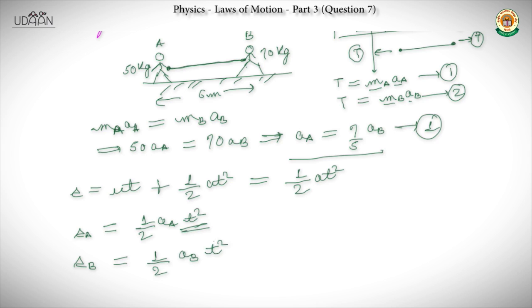We can see that SA/SB = aA/aB, and from equation 1, aA/aB = 7/5. So SA = (7/5)·SB.